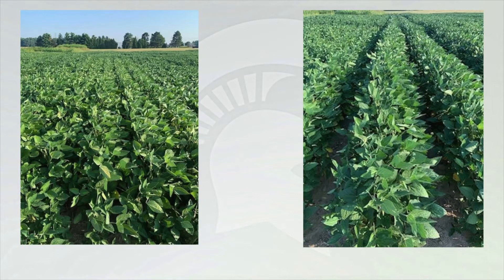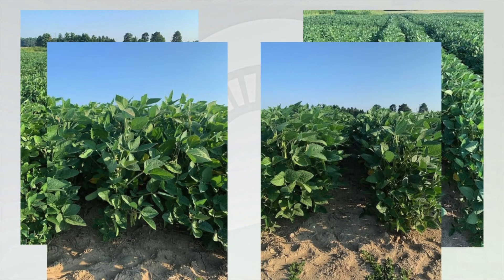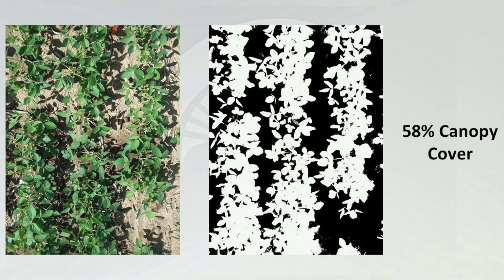Next we'll talk about row spacing. These are two pictures from this year's study showing two separate row spacings. We have 15 inches on the left and 30 inches on the right. The first thing we can notice is the difference in canopy closure — the 15-inch canopy is completely closed while the 30-inch still has about a six-inch gap between plants. Another angle shows complete closure on the left and on the right we still have areas where light interception is not maximized. One of the ways we measure this is by going out in the field with an app called Canopio and taking a picture of the soybean canopy.